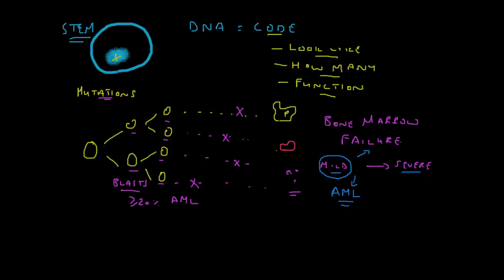Going back to the term myelodysplastic syndrome: 'myelo' refers to the factory problem; 'dysplastic' tells us that these cells do not look normal; and 'syndromes' tells us there are different diseases in this group, each with varying degrees of cytopenia and abnormally looking cells. The reason for this variation is that the different diseases within the group have different mutations — a whole range of mutations, each of which can give rise to different diseases and different risks of developing bone marrow failure or acute myeloid leukemia.